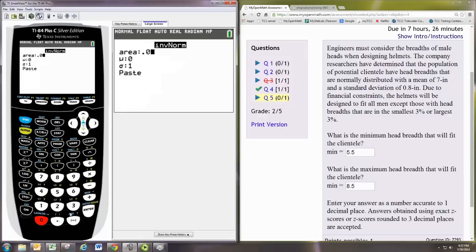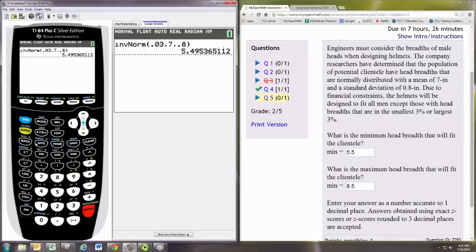And then the mean, 7, and the standard deviation is 0.8. And you can just hit 2nd, enter, and bring that back, and change that area to 0.97.